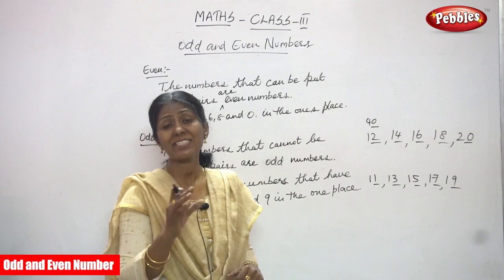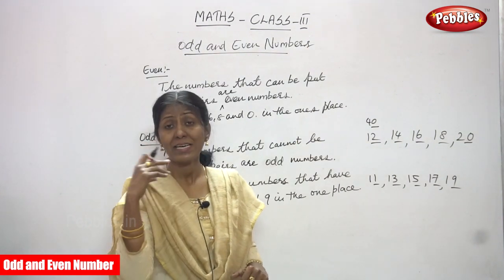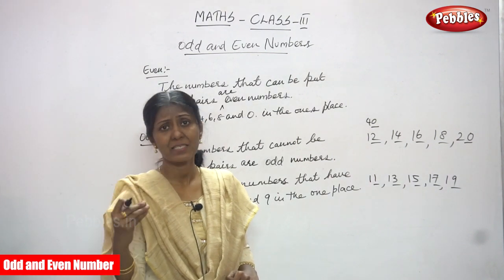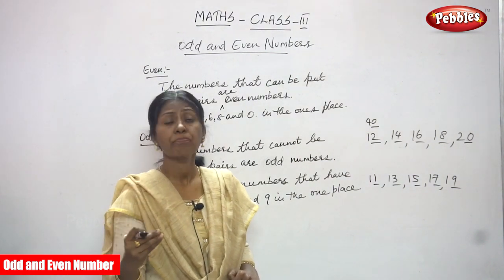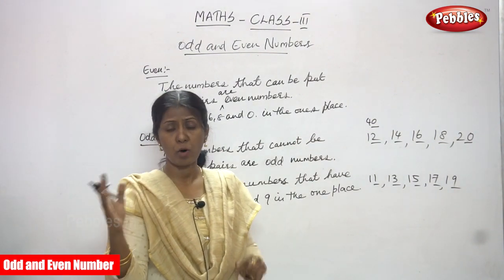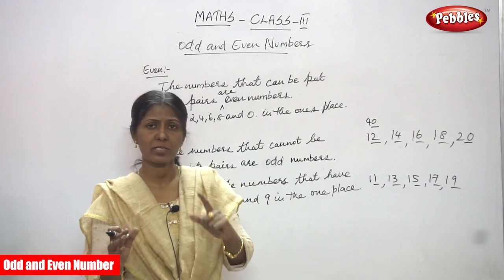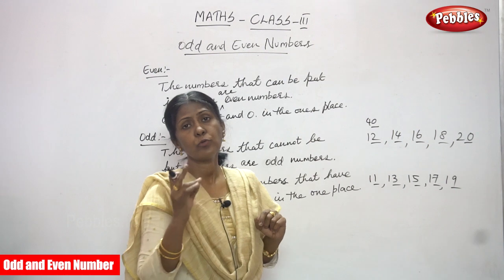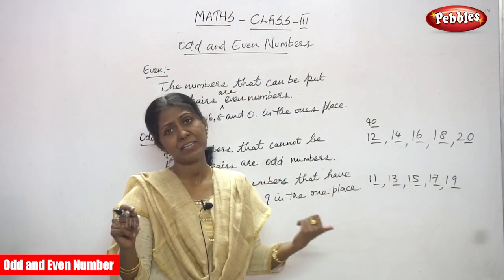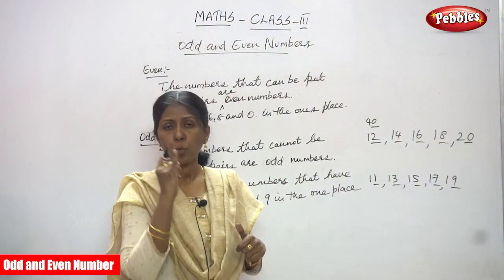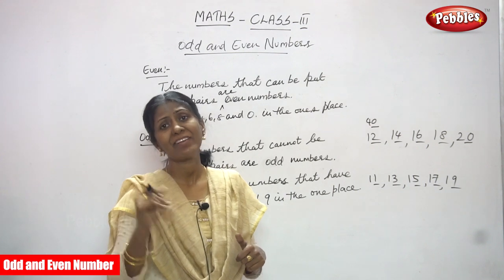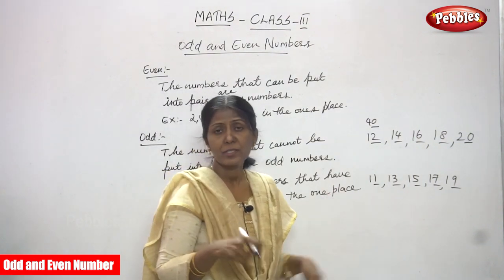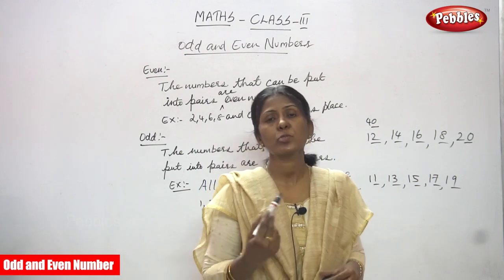We can also call the ones place the end digit — it is the last digit of the number. So if the end digit is 2, 4, 6, 8, or 0, it is an even number. If the end digit is 1, 3, 5, 7, or 9, it is an odd number. I think you understand clearly. Look at the video once or twice and you will understand the concept very clearly.